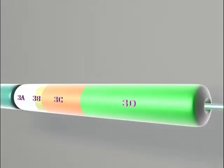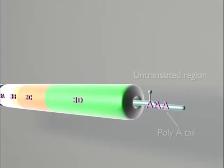Finally, at the 3-prime end of the genome, we find another untranslated region, and at its 3-prime end, a poly-A tail.